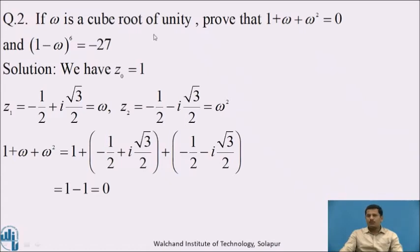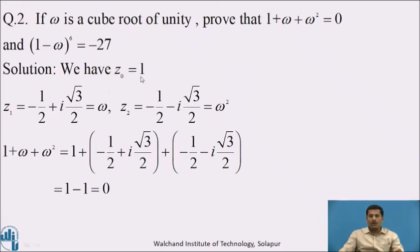Consider the next example: if ω is a cube root of unity, prove that 1 + ω + ω² = 0 and also prove that (1 − ω)⁶ = −27. We know the three roots are z₀ = 1, z₁ = −1/2 + i(√3/2), denoted as ω, and z₂ = −1/2 − i(√3/2), denoted as ω².